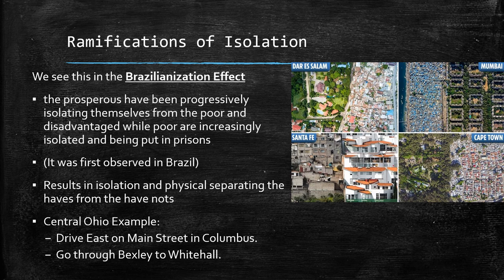A really good example of this can be found in central Ohio, in Columbus, when you drive on East Main Street. You start downtown and you drive through Bexley, then keep driving to Whitehall. First, that stretch between downtown and Bexley is relatively poor.